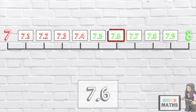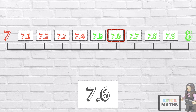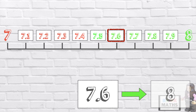The next number is 7.6. It sits between 7 and 8. Because it ends in 6, we round the number up to the next whole number, which is 8.